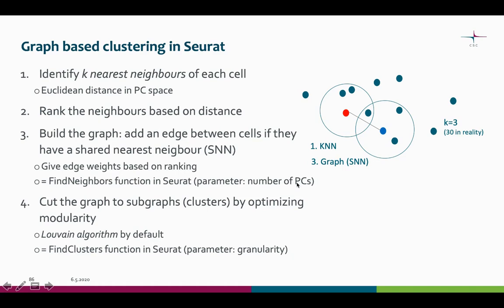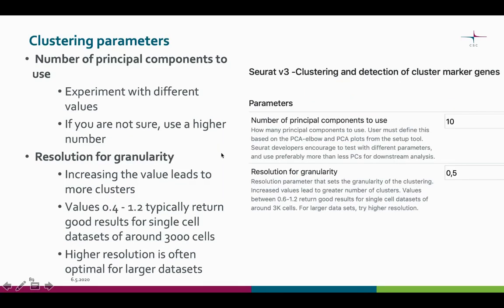This part of the clustering process is in the FindNeighbors function in Seurat, and it has one parameter: the number of principal components to use. You may remember from the previous video how we determined the dimensionality of the data. When we have built the whole graph and determined all the edges, we use an algorithm to cut the full graph into subgraphs or clusters by optimizing modularity. The Louvain algorithm is used by default, and this step is included in the FindClusters function in Seurat, which has one parameter: the granularity.